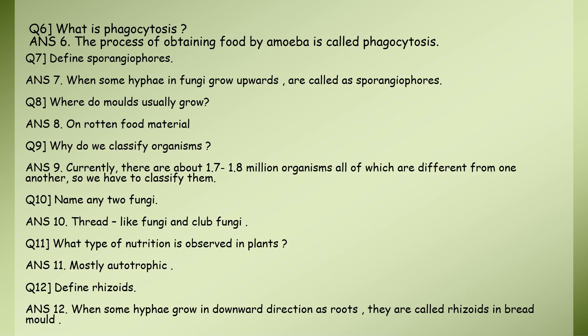What is phagocytosis? Phagocytosis is the process of obtaining food by amoeba. It is a process in which amoeba obtains and engulfs food. This is called phagocytosis.